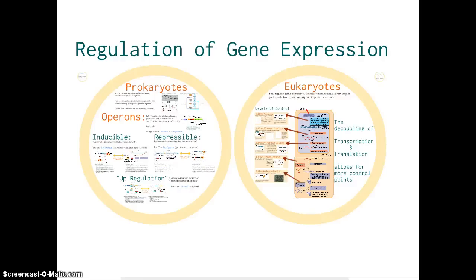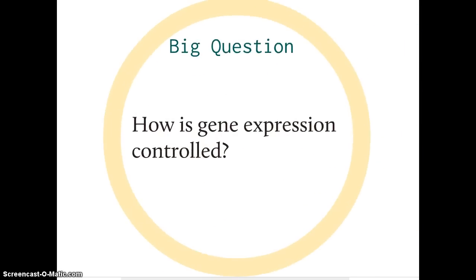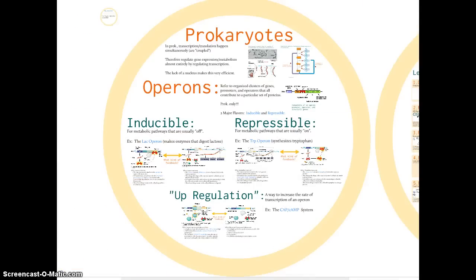Hello everyone and welcome to semester two of AP Bio. Today we're going to be looking at how organisms control the expression of their genes. Last semester chapter 17 took us through how to make proteins, and now in this chapter we'll look at how to control the production of those materials. The big question, whether for prokaryotes or eukaryotes, is how do we control the expression of those genes.